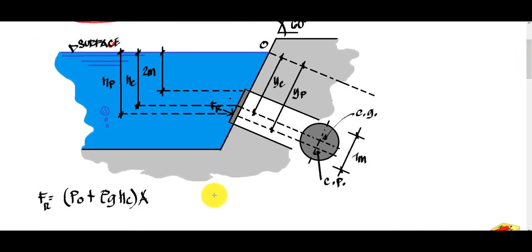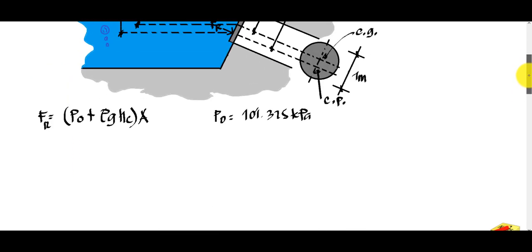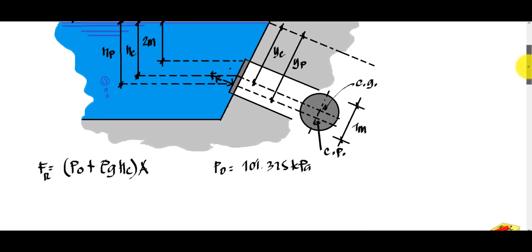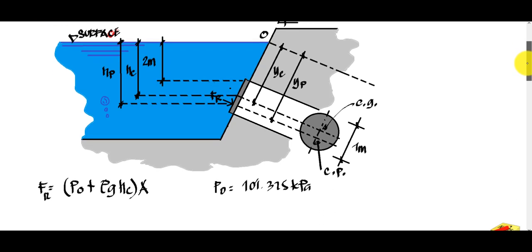The atmospheric pressure is 101,325 Pascals, which is 101,325 newtons per square meter. Since we are only using water here, the density is a constant 1,000 kilograms per cubic meter, and gravity g is 9.81 meters per second squared. We now need to determine the value of hc.